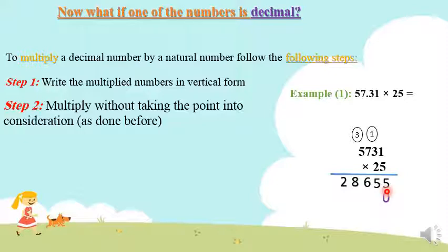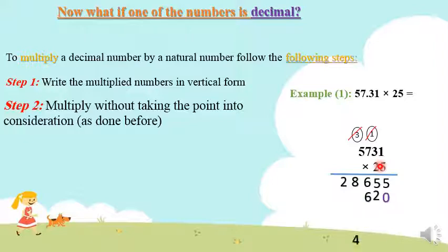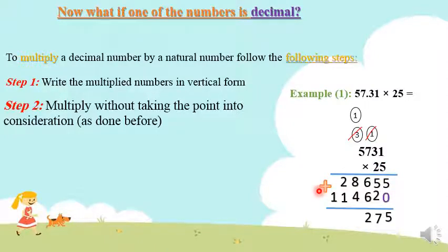Then multiply 2 by each digit of the first number. You can cross out the carry-out numbers so you will not get confused. Let's multiply 2 by 5,731: 2 times 1 is 2, 2 times 3 is 6, 2 times 7 is 14 — write 4 and carry 1. 2 times 5 is 10, plus 1 is 11. When you finish, add the answers starting from right to left. This is our final product.